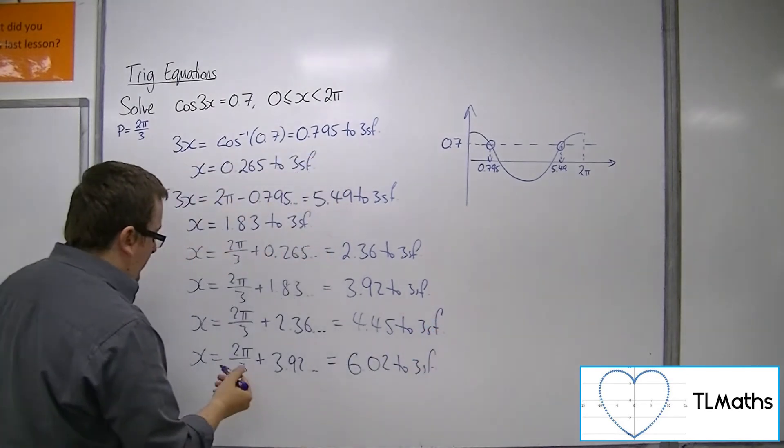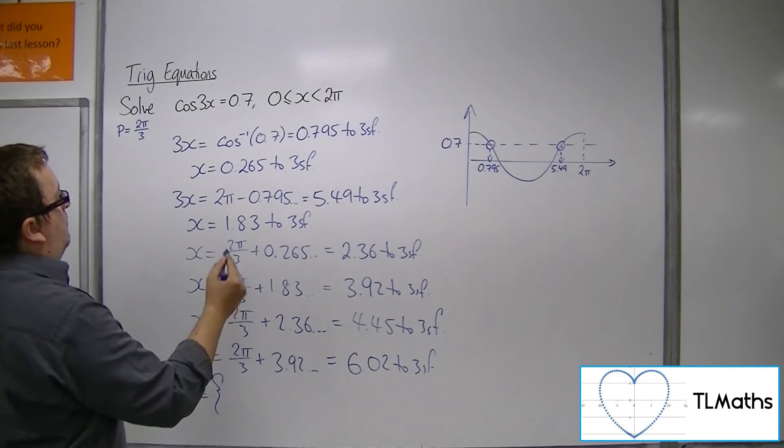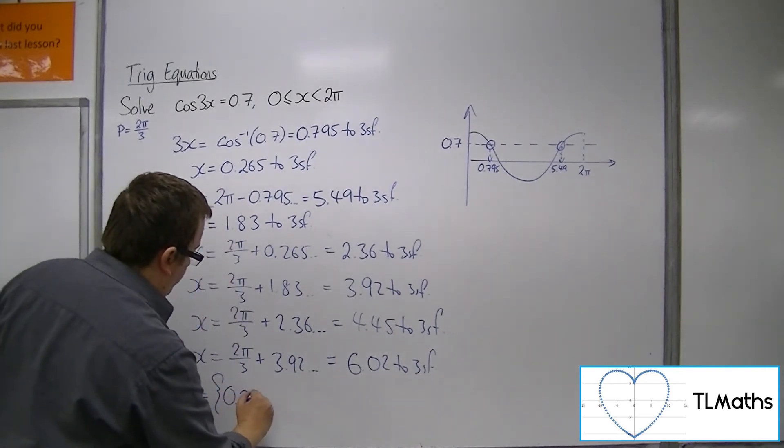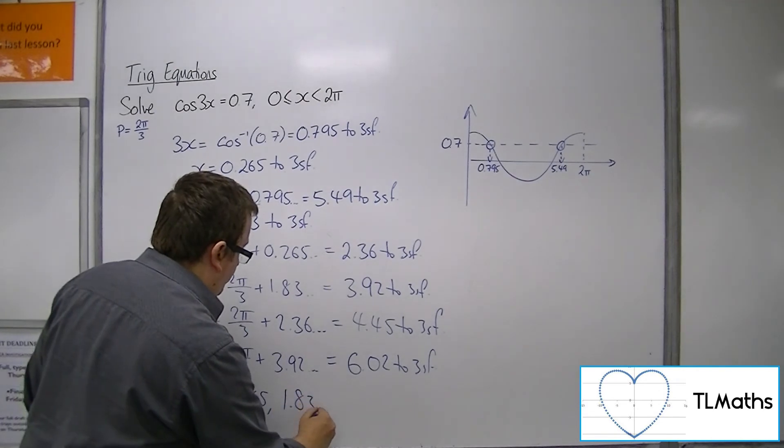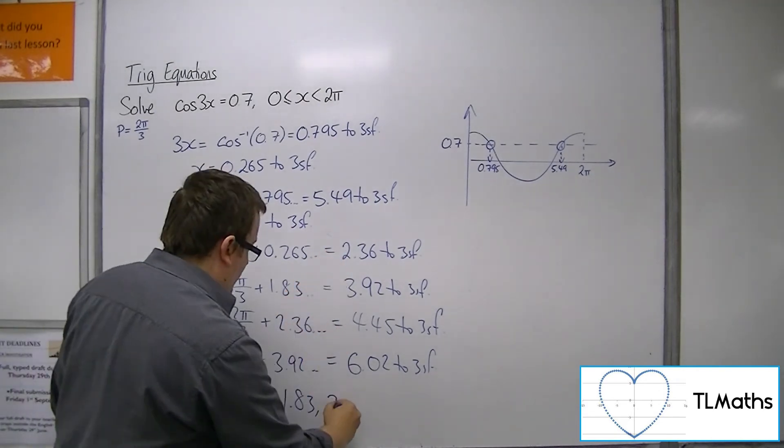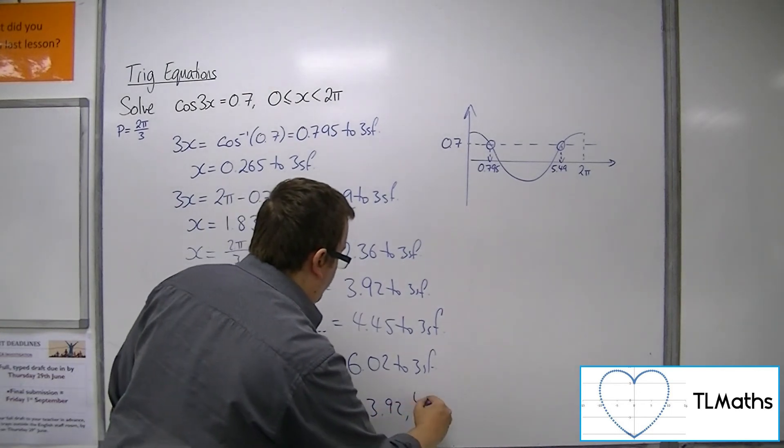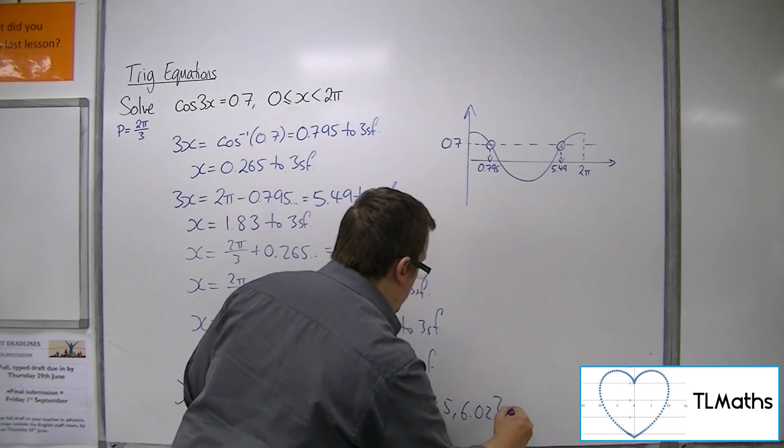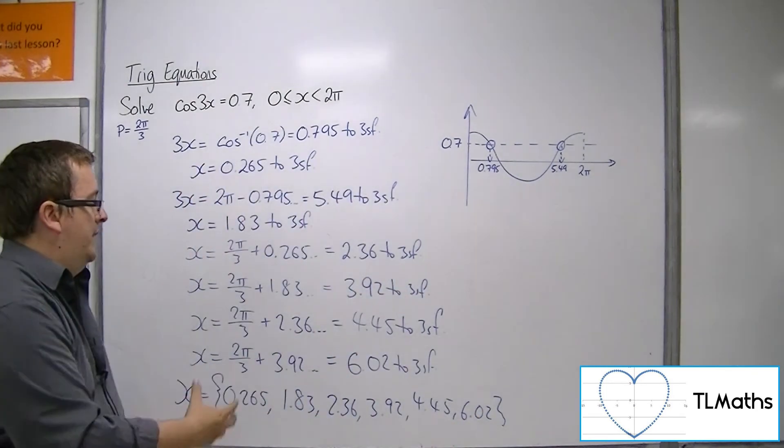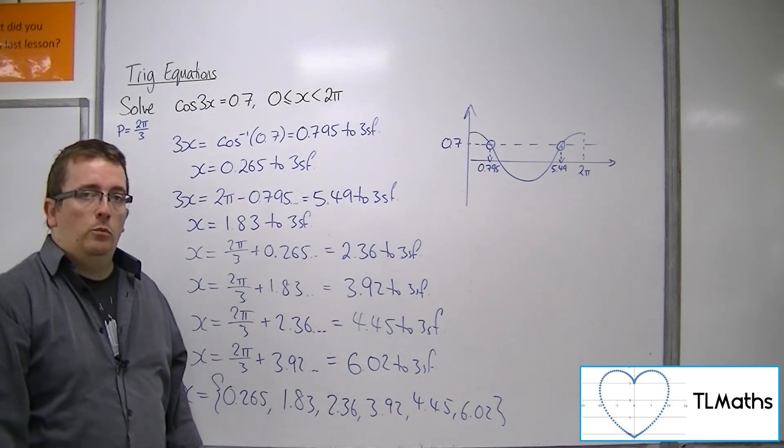We now have our 6 solutions. x equals 0.265, 1.83, 2.36, 3.92, 4.45, and 6.02 to 3 significant figures. These are the 6 solutions to cos(3x) = 0.7.